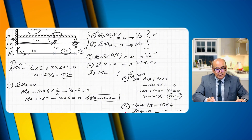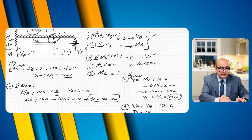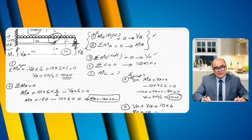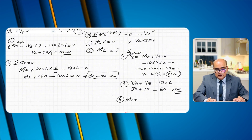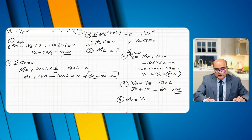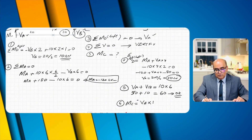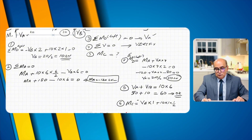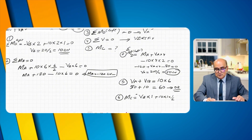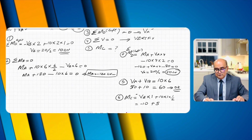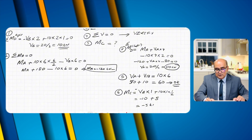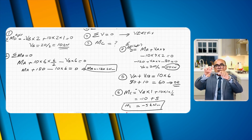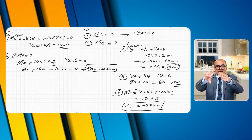Finally, finding MC at the center of the right span: MC equals minus VB times 1 plus 10 times 1 times 0.5 equals minus 10 plus 5, so MC equals minus 5 kilonewton meters. A negative moment from the right side creates a sagging moment, not hogging.